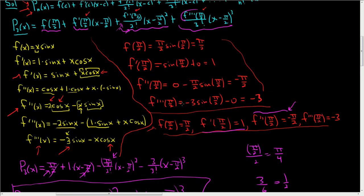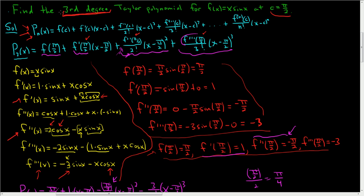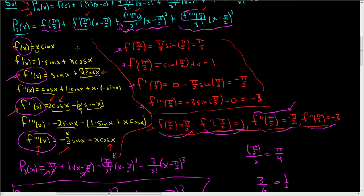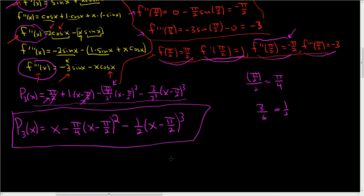To review: since we wanted the third degree Taylor polynomial, we took three derivatives — here's the first, second, and third in their simplified forms. Then we plugged pi over 2 into f and each derivative to get our coefficient values. We carefully substituted everything into the Taylor polynomial formula, got that expression, simplified it, and that's the final answer.